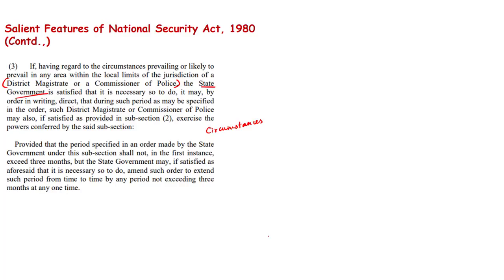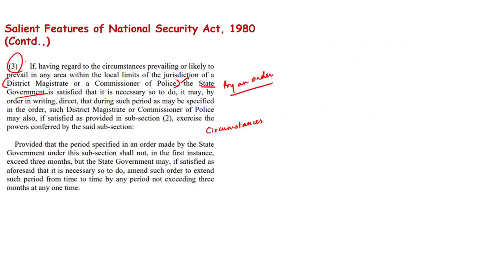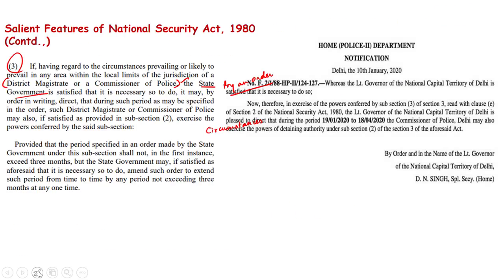When the state government is satisfied that it is necessary to detain someone, it may direct the district magistrate or commissioner of police by order in writing to exercise the powers of the detaining authority for a specified period. This power is based on subsection 3 under section 3 of this act. The lieutenant governor of Delhi exercised his powers under subsection 3 of section 3 to direct the commissioner of police of Delhi to exercise the powers of detaining authority under subsection 2 of section 3.